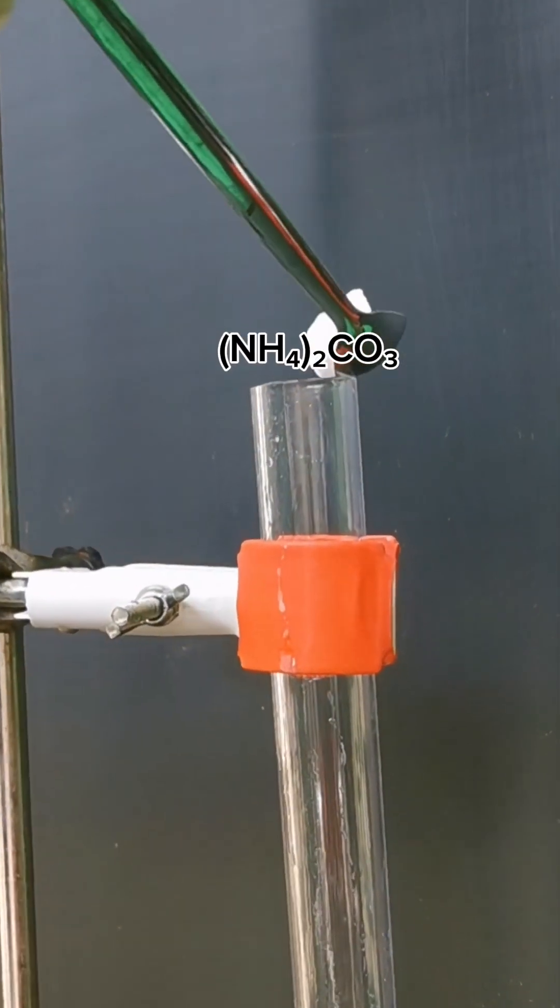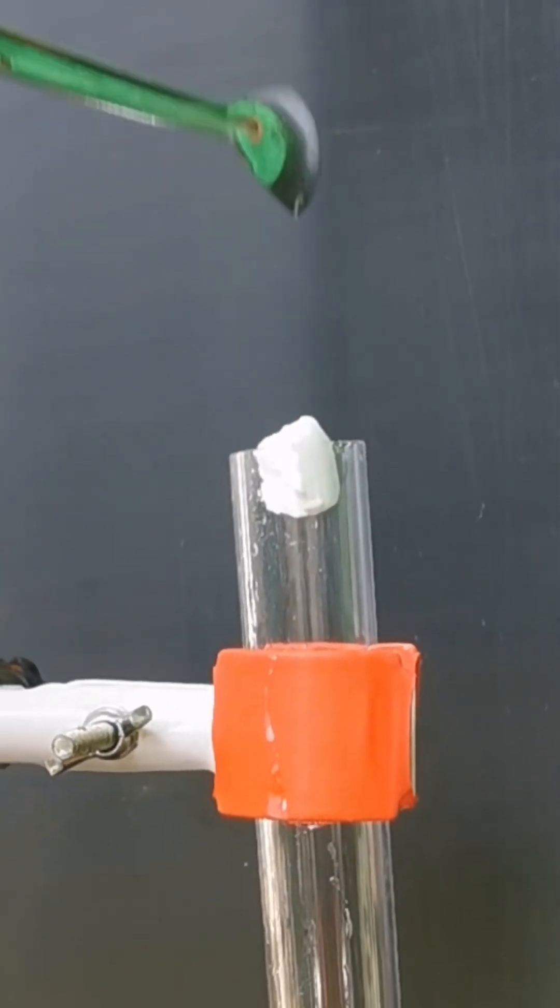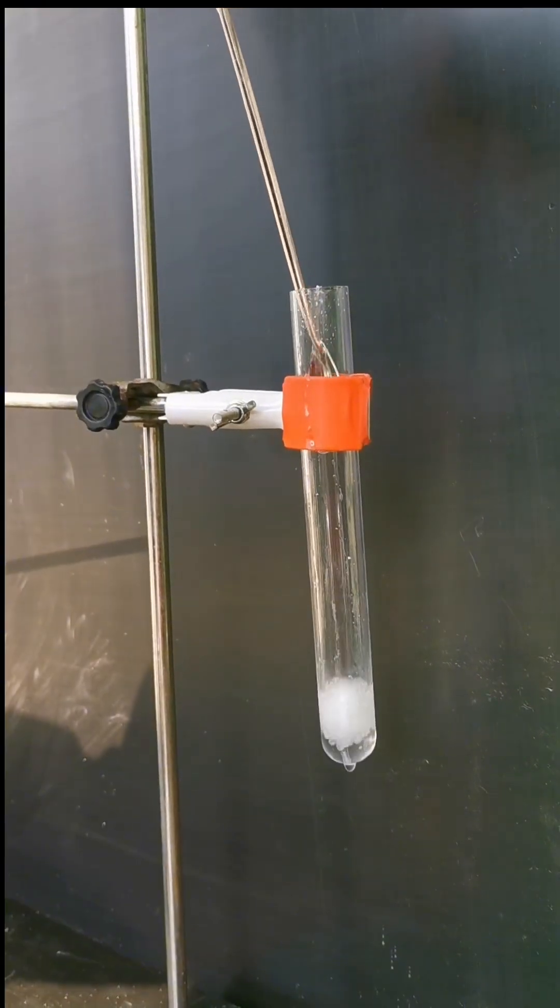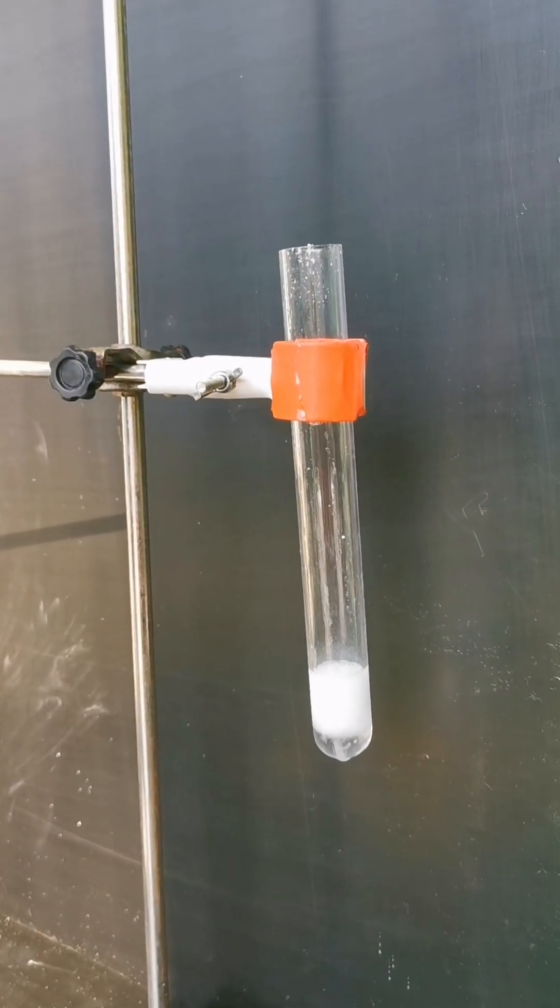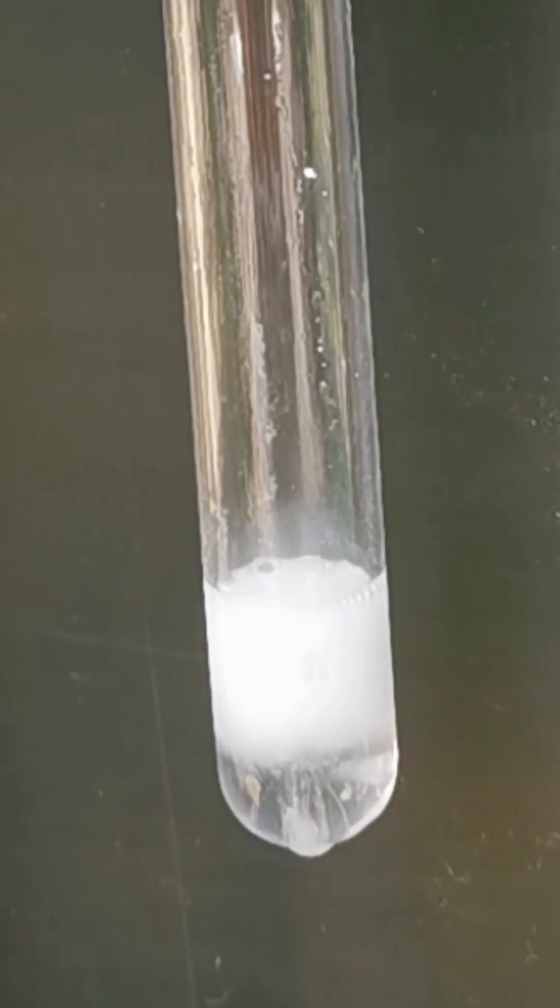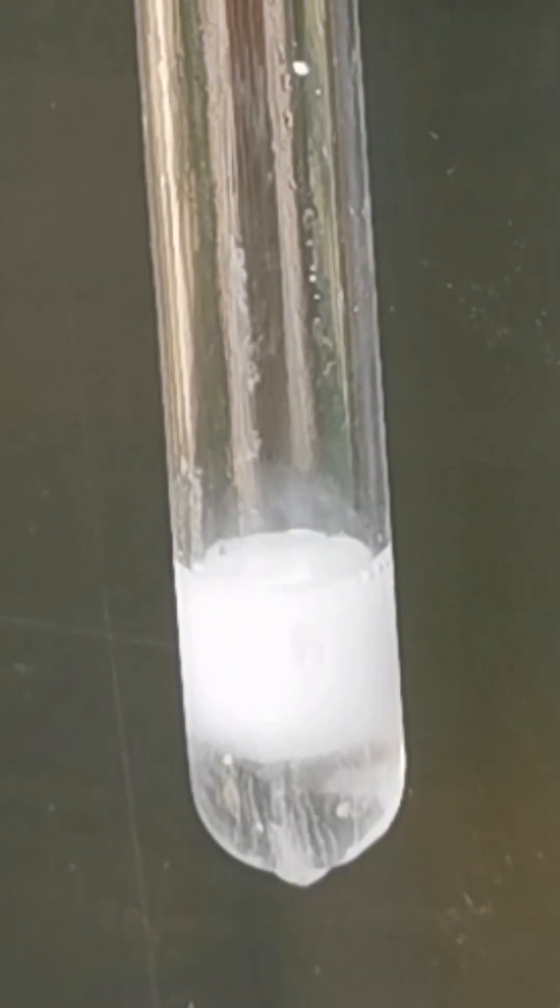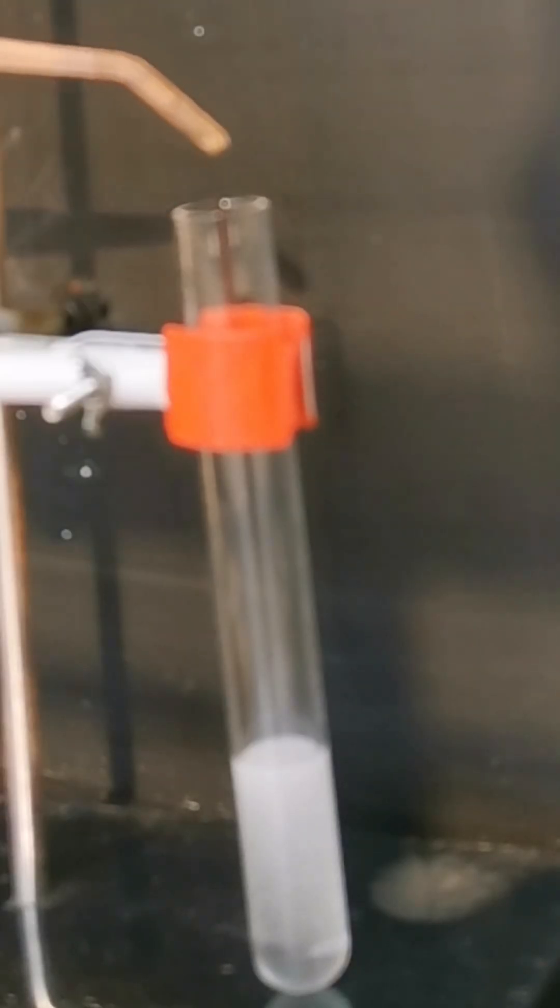This piece of ammonium carbonate is too large, so it can't slide into the tube by itself. It produces some nitrogen and carbon dioxide gas. This reaction can occur spontaneously.